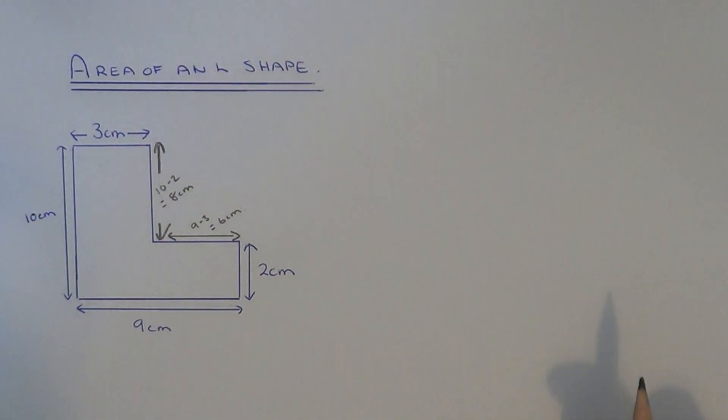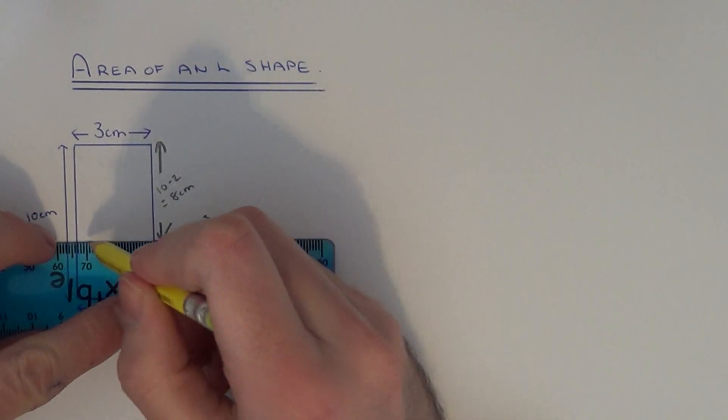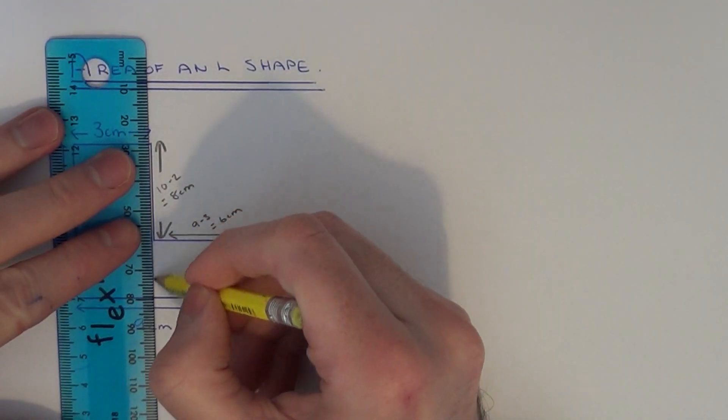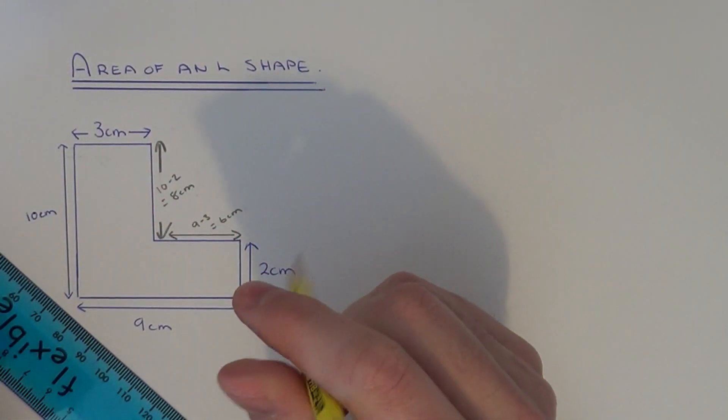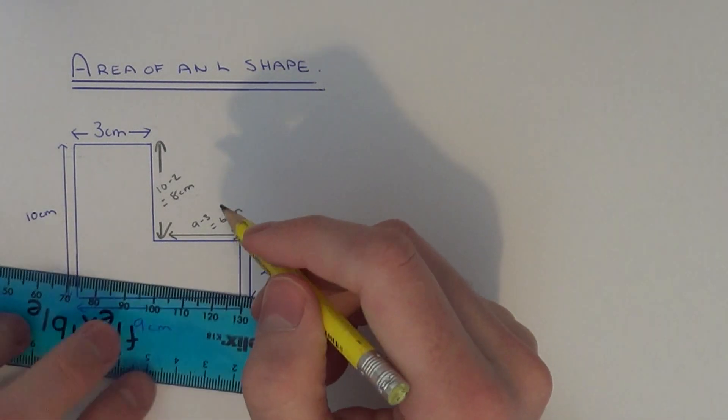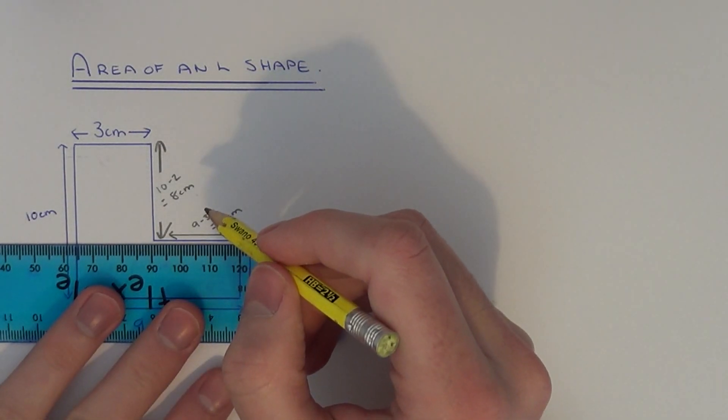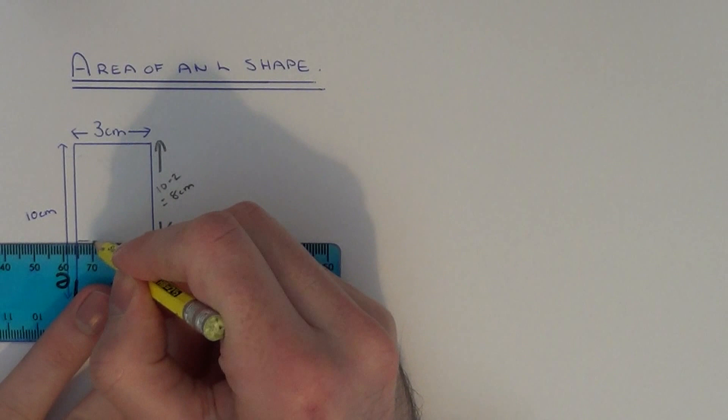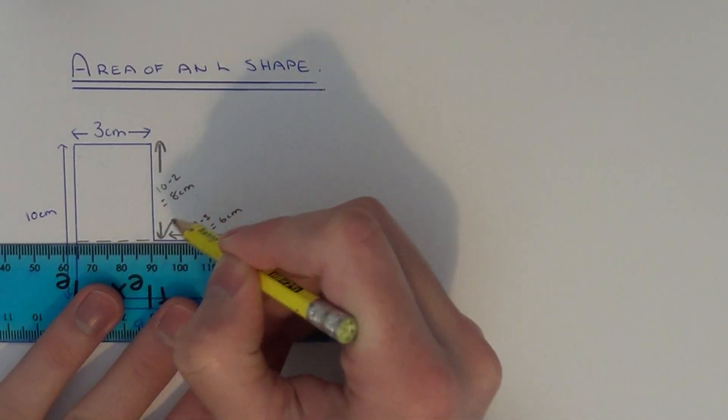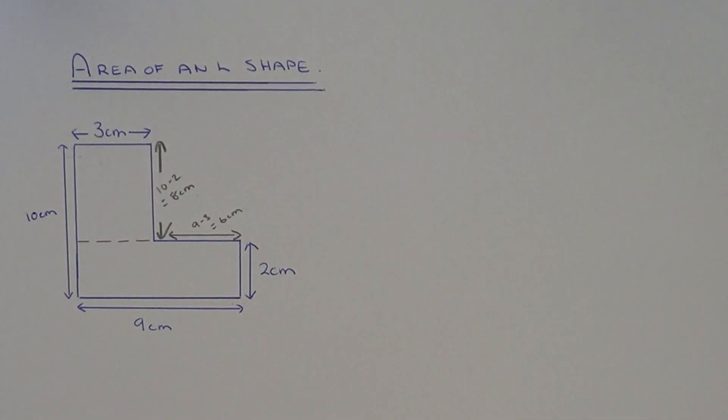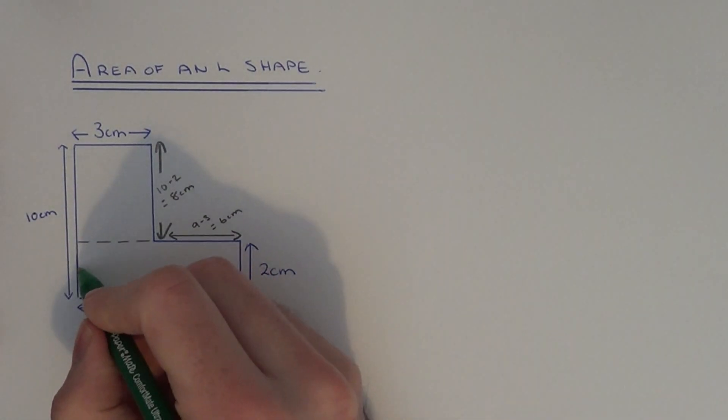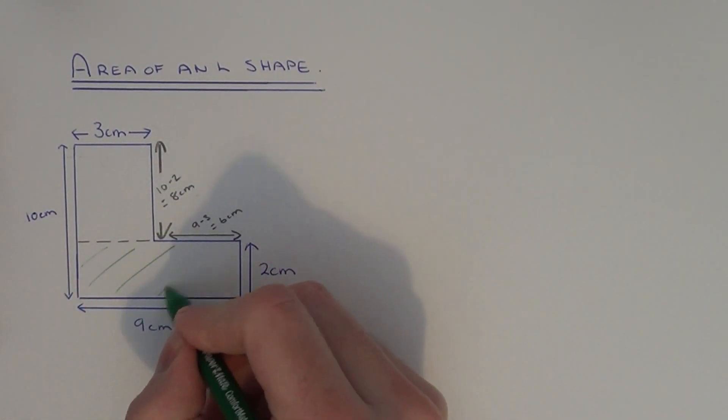Next thing you need to do is split your L shape up into two rectangles. We can either do this going across or going down. Both ways will give you the same answer. So let me go with going across. I'm just going to shade in these two rectangles to make it clearer.